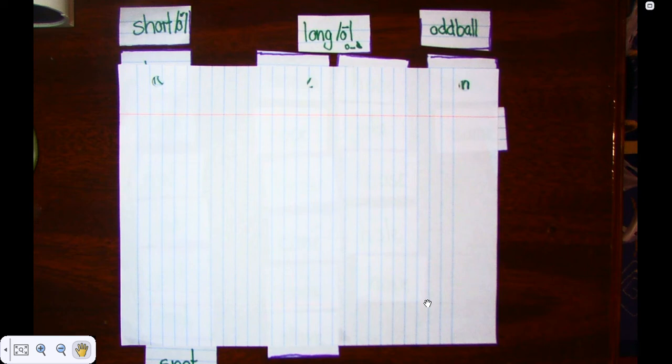Good morning, boys and girls. Today is day seven of our blind sort. Remember, we're doing sort number 68 with the short and long O and the oddballs. Oddballs being the words that do not follow the rules. Go ahead and sort your words.